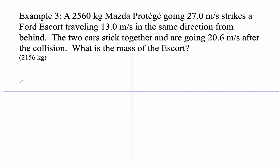Okay, so here is our Mazda Protégé. It's 2,560 kilograms, and let's say it's going to the... Oh, it doesn't say which way it's going. Okay, but it says they're going in the same direction. Okay, so it's going 27 meters per second, right? And then here's the Ford Escort.